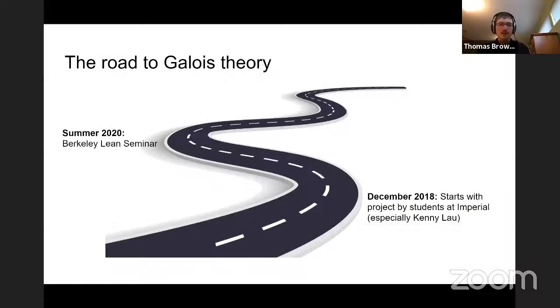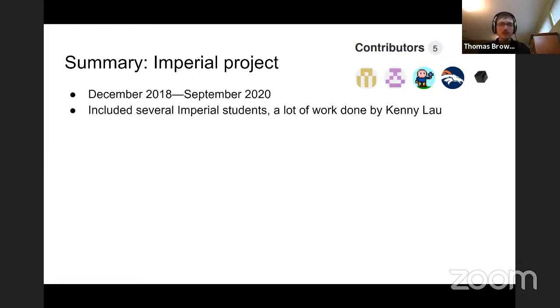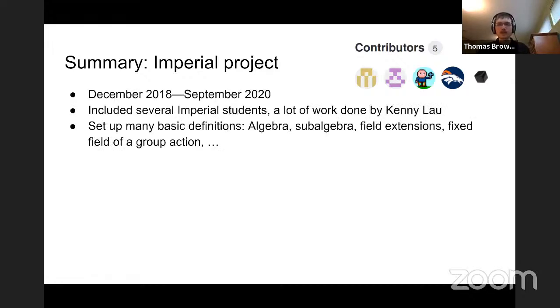Last summer we organized the Berkeley Lean Seminar, and following that we started working towards Galois theory. We're currently working towards the Abel-Ruffini theorem. Let me summarize what the group at Imperial did. A few years ago, mostly undergraduates worked on this — Kenny Lau did a lot of it, contributing many of the basic algebraic structures in Lean's algebra library.